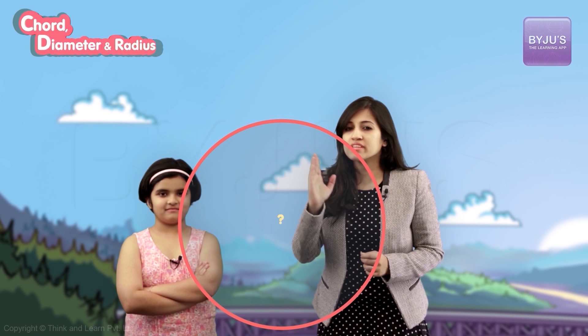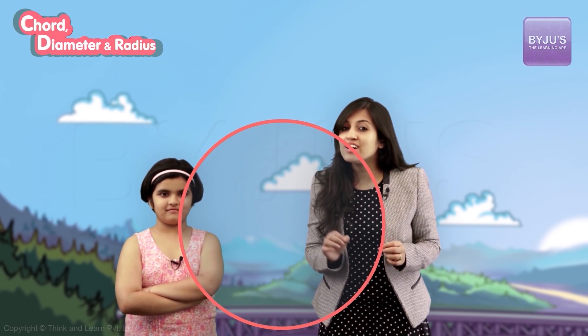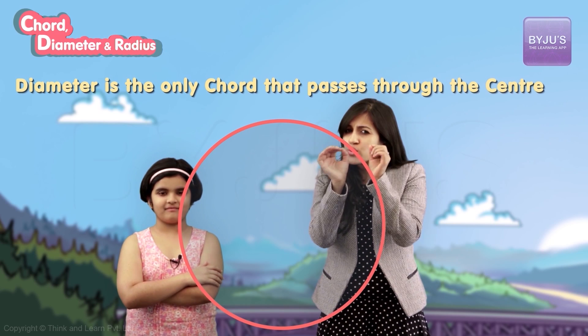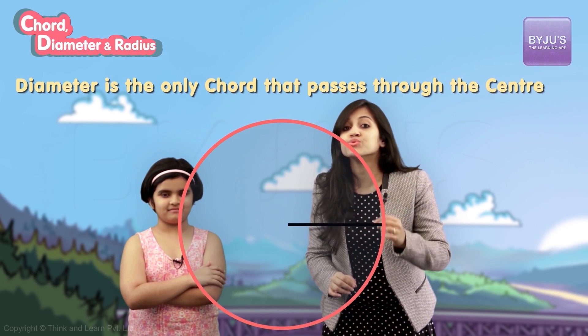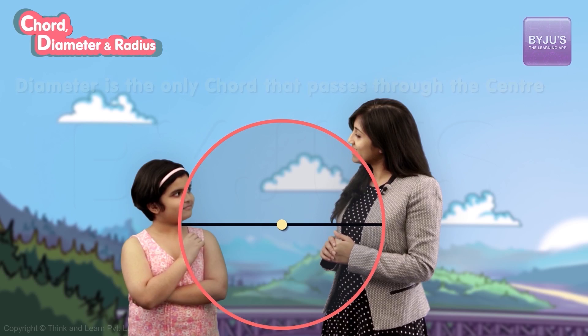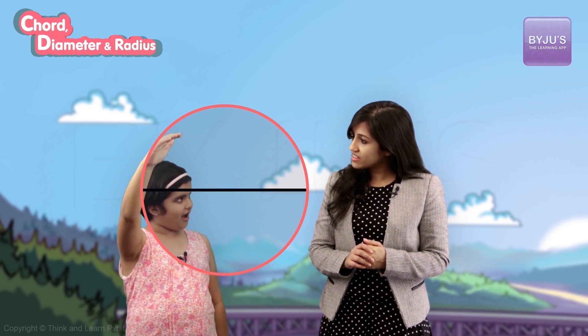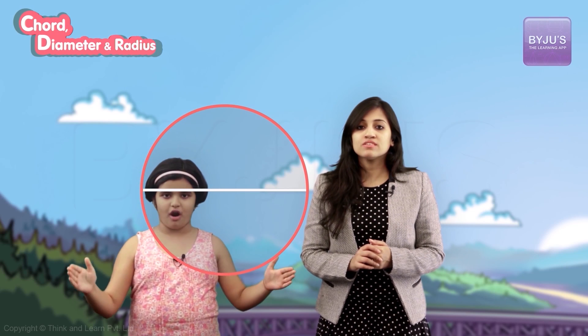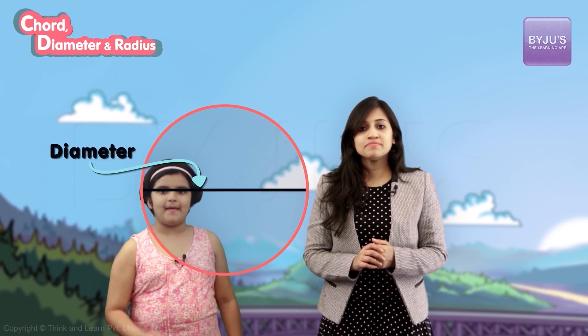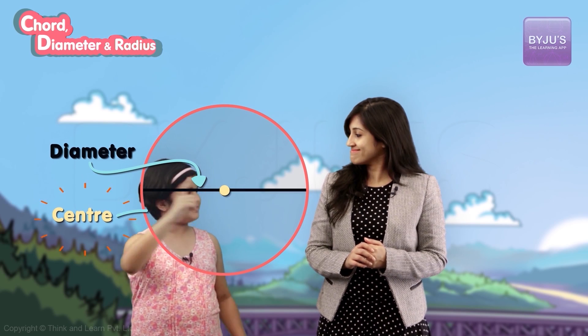Now that you understand this, if we were just given a circle, how do you find the center point? Here's a clue: the diameter is the only chord that passes through the center. So if I drag the chord up and get the longest chord, that is my circle's diameter. Then the midpoint of this diameter is the center.